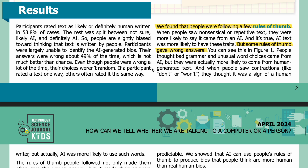Even though people were wrong a lot of the time, their choices weren't random. If a participant rated a text one way, others often rated it the same way. We found that people were following a few rules of thumb. When people saw nonsensical or repetitive text, they were more likely to say it came from an AI — and it's true, AI text was more likely to have these traits. But some rules of thumb gave wrong answers. People thought bad grammar and unusual word choices came from AI, but they were actually more likely to come from human-generated text. And when people saw contractions like 'don't' or 'won't,' they thought it was a sign of a human writer, but actually AI was more likely to use such words.